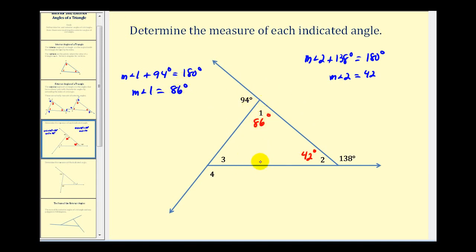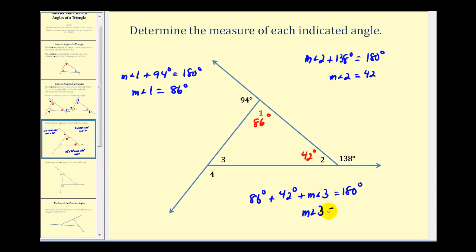Now looking at the interior angles, the measure of angle one plus the measure of angle two plus the measure of angle three must equal 180 degrees. Angle one is 86 degrees and angle two is 42 degrees, so 86 plus 42 is 128. Subtracting 128 from both sides gives us the measure of angle three, which is 52 degrees. Then to find angle four, angles three and four form a linear pair, so 180 minus 52 gives us 128 degrees for angle four.